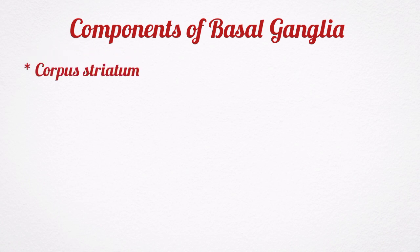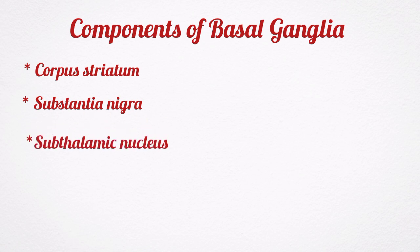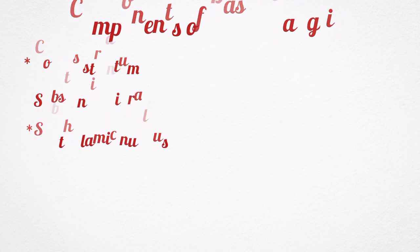The components of the basal ganglia include the corpus striatum, the substantia nigra, and the subthalamic nucleus.